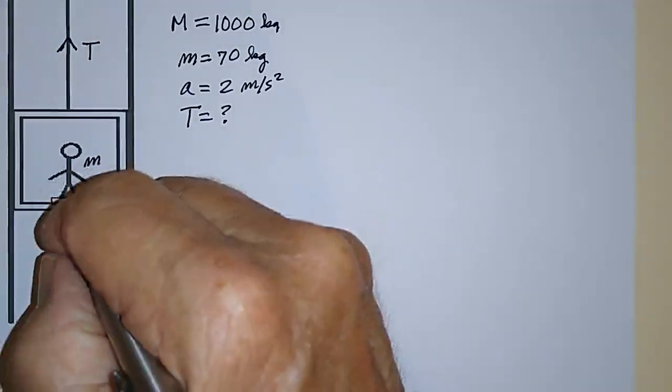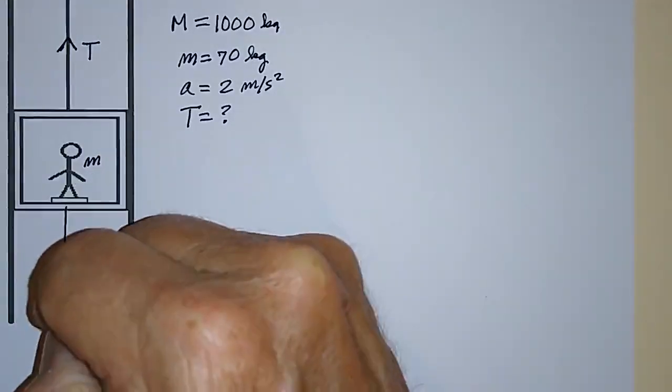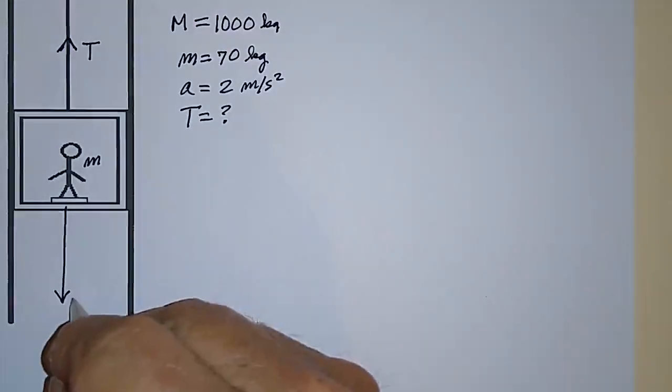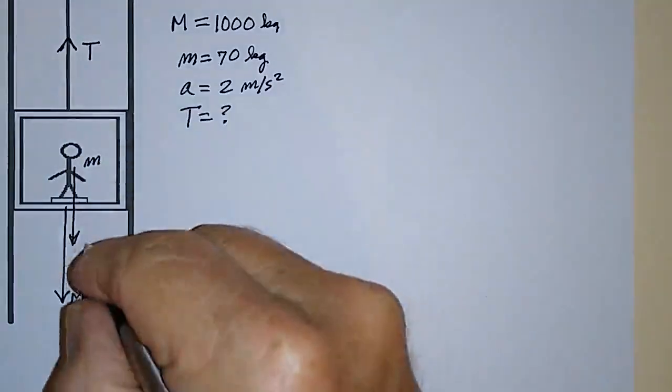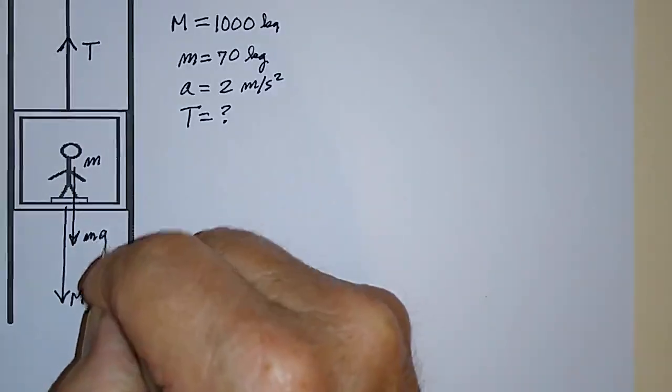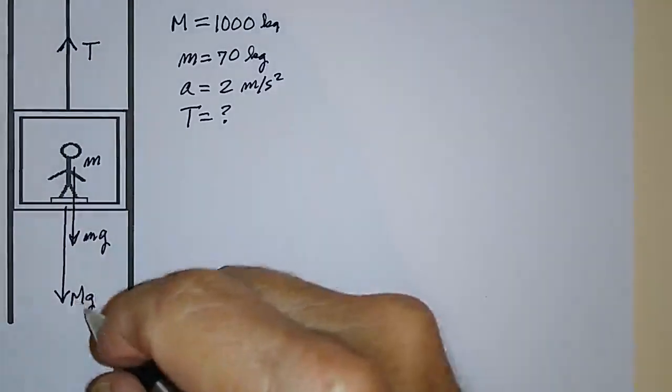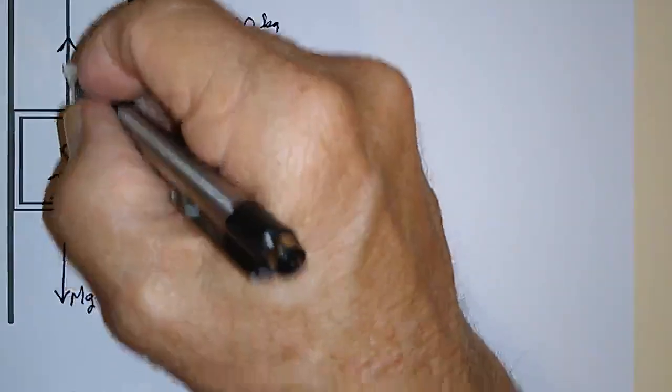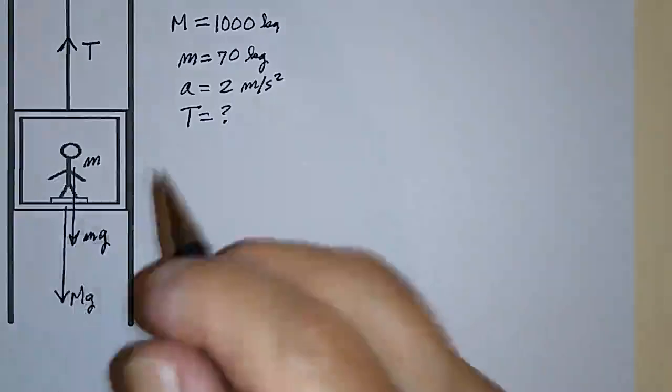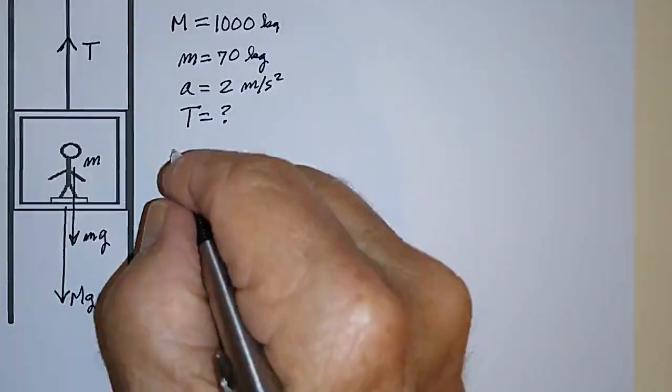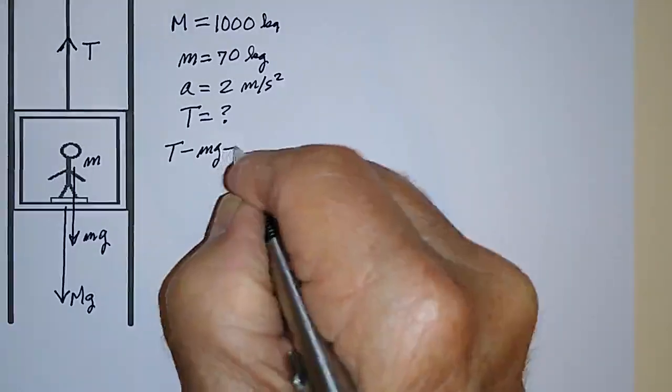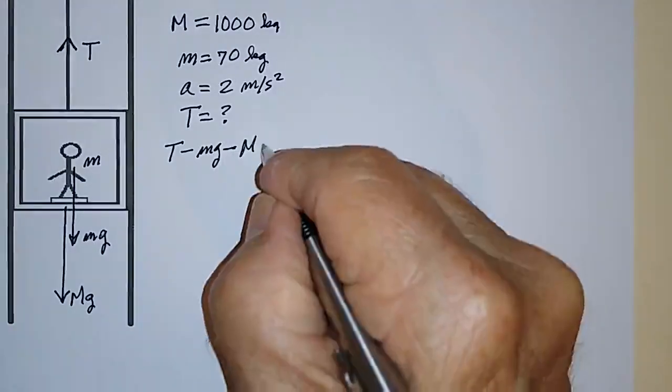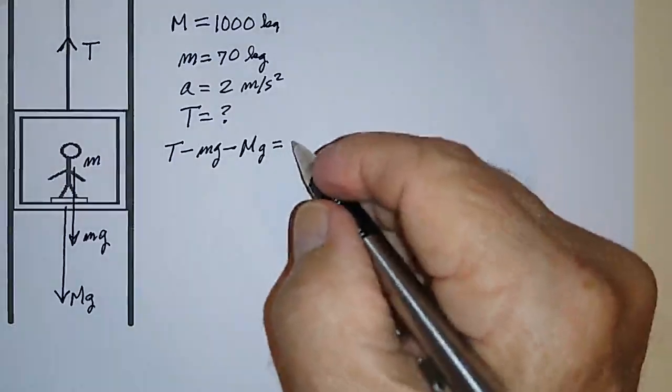So we represent the force due to gravity acting on the elevator and the scale as big M times G. And then the force acting on the man is little m times G. So these two forces are acting downward, and this is the force acting upward. So F net, the net force, is just T minus little m G minus big M G. And that has to be equal to M A.